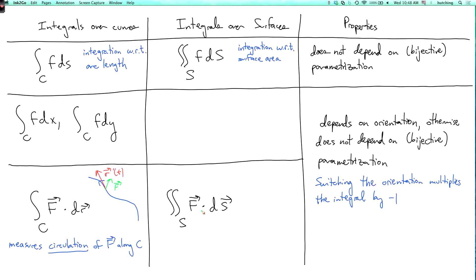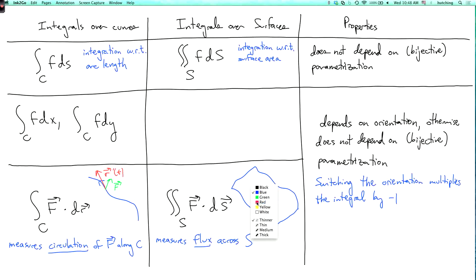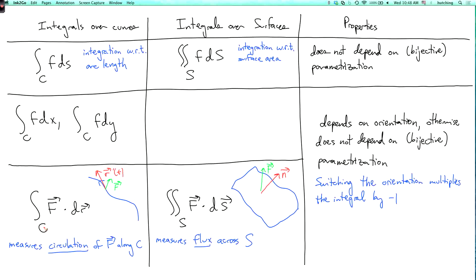The integral of a vector field over a surface is different — it's actually sort of the opposite thing. Here we're measuring the flux across the surface. If the surface is over here, at a point on the surface we take the unit normal vector to the surface and we take the dot product of f with that. So this is measuring the extent to which f is pointing in the normal direction of the surface. For the curve we use a tangent vector, while for the surface integral we use a normal vector.